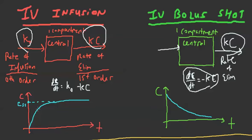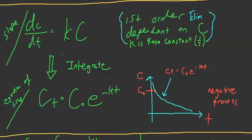So the rate of IV bolus is dC/dT = negative KC — that's the slope. We want to find the actual equation of the line, so we integrate. When we integrate, we find the equation of the line, which turns out to be CT = C0 · e^(−KT). A couple things to note: the rate is first order and it's elimination. For first order, the rate is dependent on C, and K is the rate constant — not the rate itself. The units of the rate constant are 1 over time.